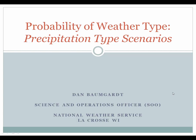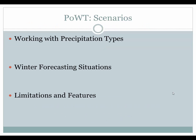Howdy, this is Dan Baumgart with the National Weather Service in La Crosse with one of the scenario trainings for the probability of weather type and the release of the Forecast Builder. This training is on precipitation type scenarios that will be used in the probability of weather type. There are three scenario groups right now that we're currently training on: working with precipitation types, winter forecasting situations, and limitations and features associated with the POWT.